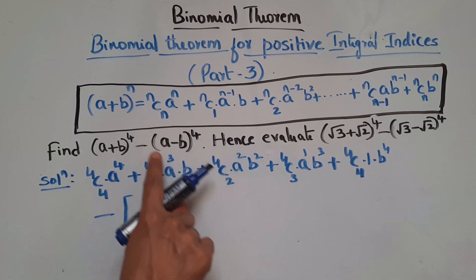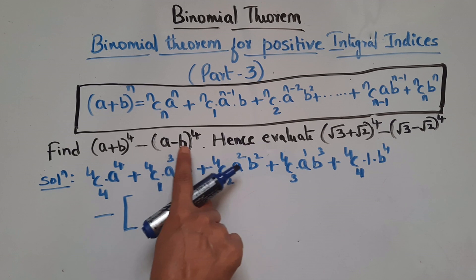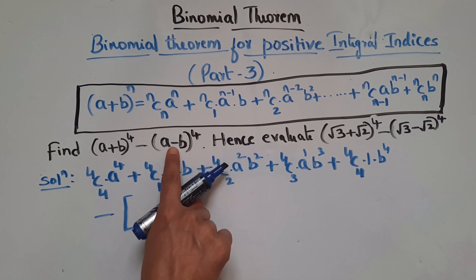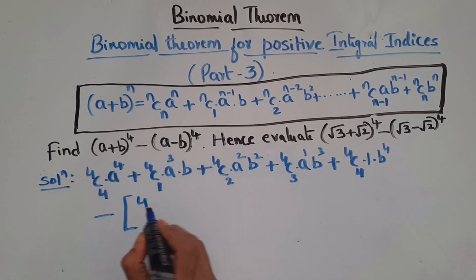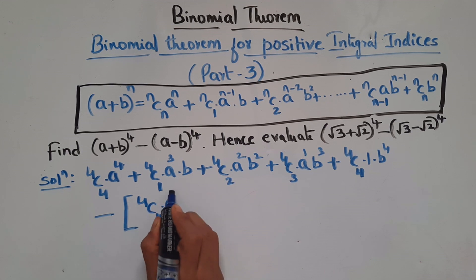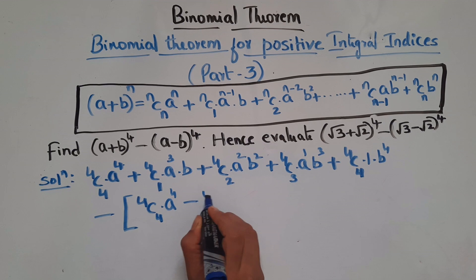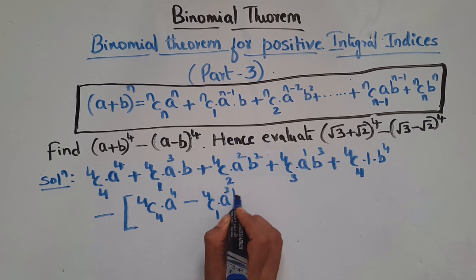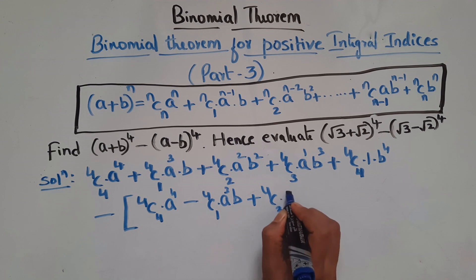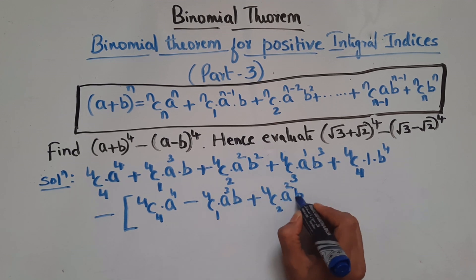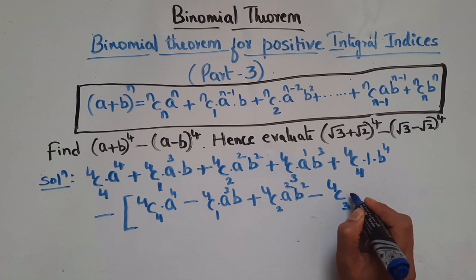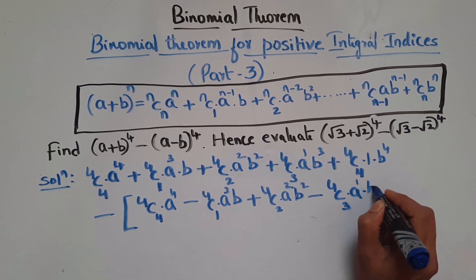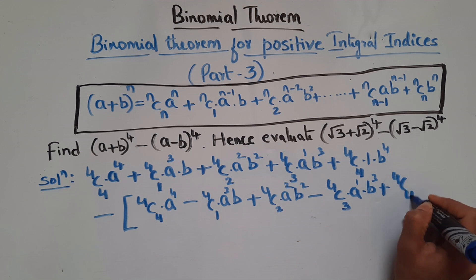Now for (a - b)⁴, this is of the form (a - b)^n, so the signs alternate plus and minus. The first term is positive: 4C0·a⁴, next term is negative: minus 4C1·a³·b, then plus 4C2·a²·b², minus 4C3·a¹·b³, and plus 4C4·b⁴.